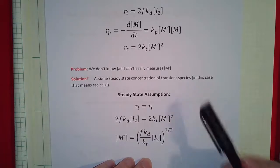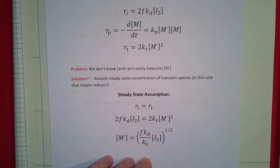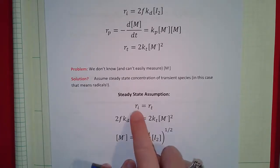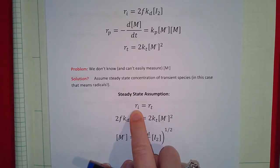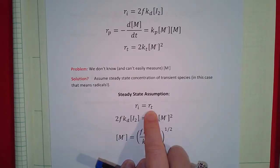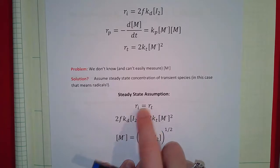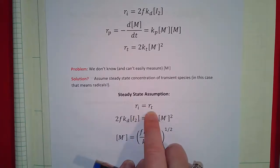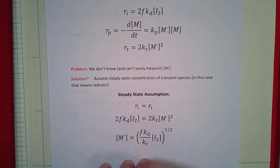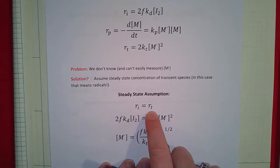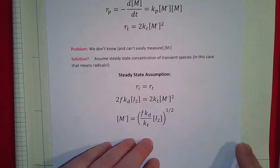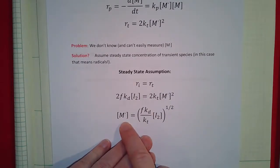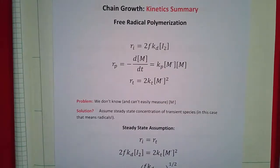The steady state assumption says that the concentration of the active species — the free radical, the anion, the cation — is not changing with time. The rate of initiation is forming the radicals and the rate of termination is killing them. If we're going to be at steady state, these two rates have to be equal: ri equals rt. So now it's simple algebra — we set ri equal to rt and solve for the concentration of radicals.